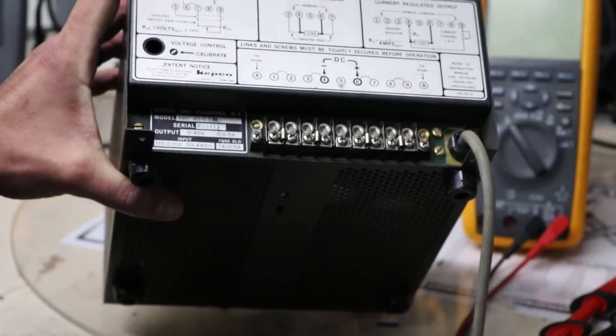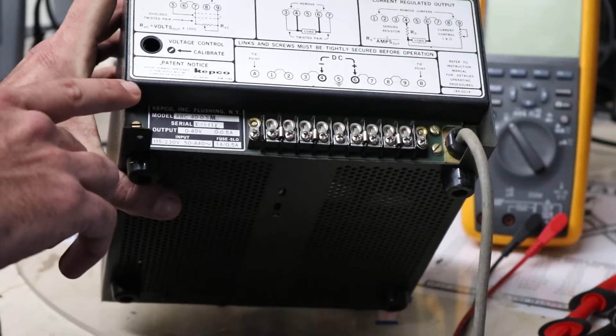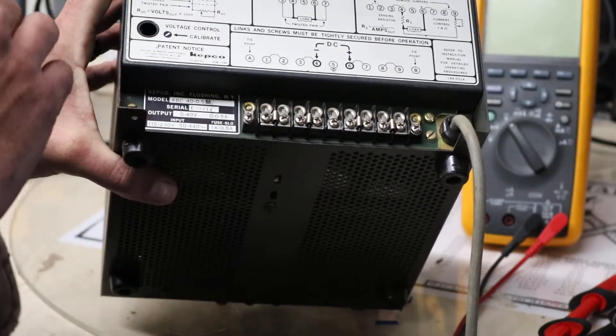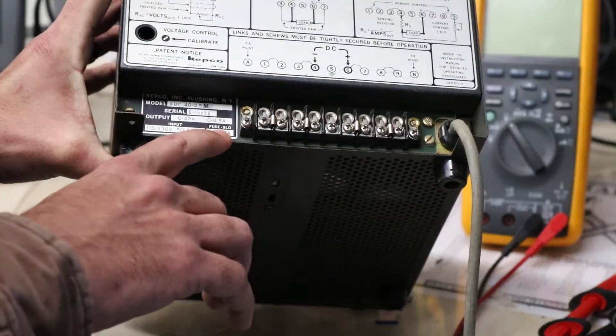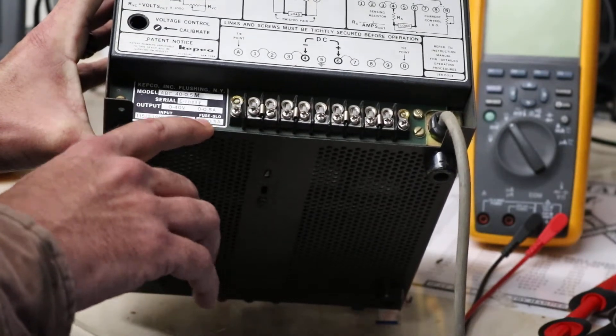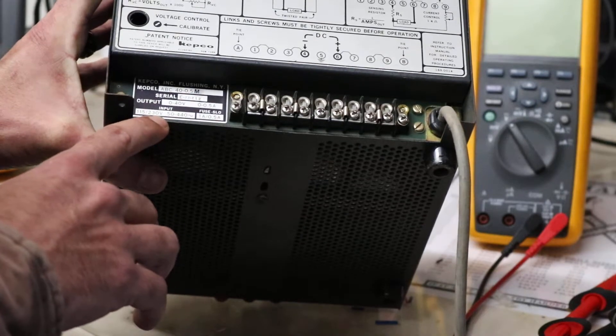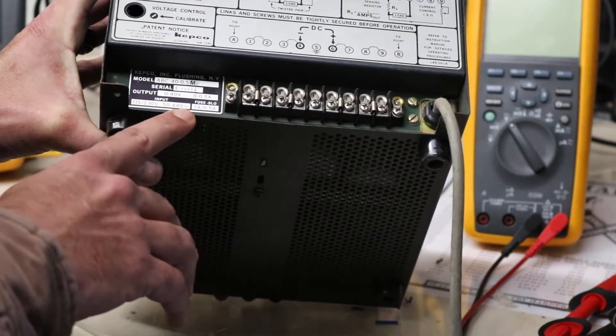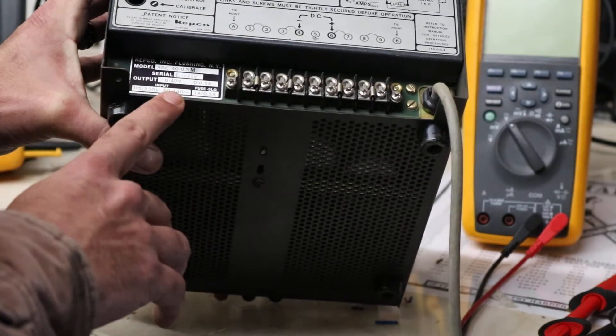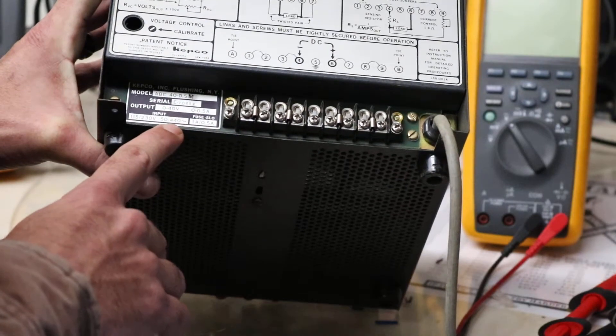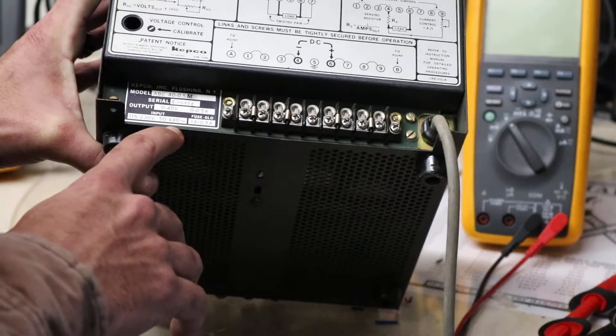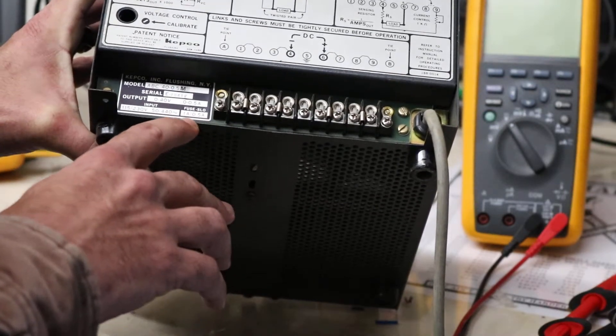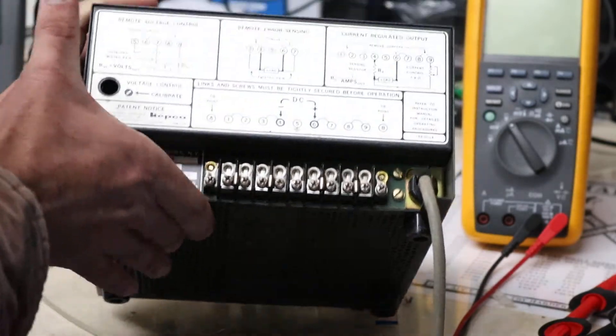So let me zoom in on this. It's a model ABC 40-0.5M, so it's a zero to 40 volt, zero to half an amp, 0.5 amps total output. It's multi-voltage 120-230 volt. Not sure why it says 50 to 440. I wouldn't think that it's capable of that type of input. I fail to believe that this is a 50 hertz piece of test gear since it was manufactured and used here in the US. And then it gives our fuse rating, it's got a slow blow fuse, looks like one amp or half an amp.